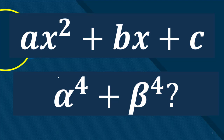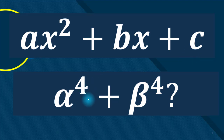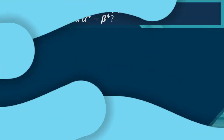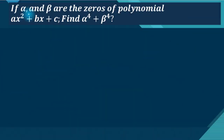Hello students, welcome. The question is: if alpha and beta are two zeros of the quadratic polynomial ax squared plus bx plus c, then we have to find the value of alpha to the fourth power plus beta to the fourth power. Let us start — given that alpha and beta are roots of ax squared plus bx plus c equals zero.